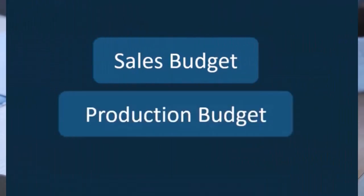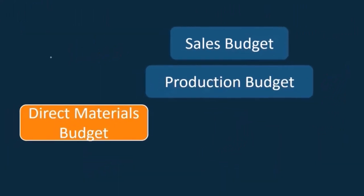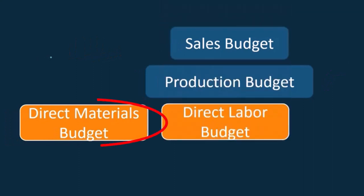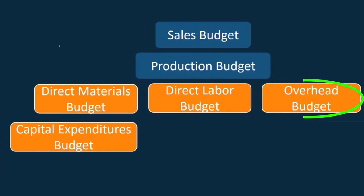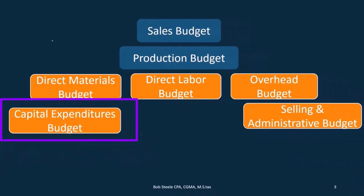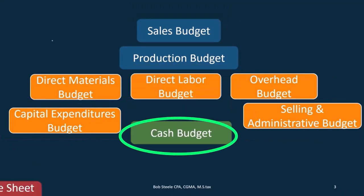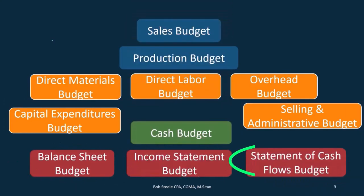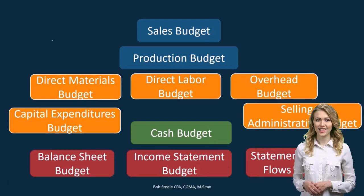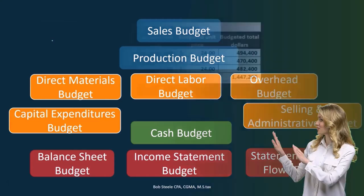So we're going to start off with the sales budget, then we need to do the production budget in order to get the units we need to produce. Once we have that, we can figure out how much direct materials we'll need, how much direct labor we'll need, how much overhead we'll need. We can also have the capital expenditure budget, as well as the selling and administrative budget. Then we can have the total cash budget, and then create the balance sheet, budgeted income statement, and the budgeted statement of cash flows. This is the order we need to go through so that everything flows in the proper format, because many of these steps need to happen prior to another.